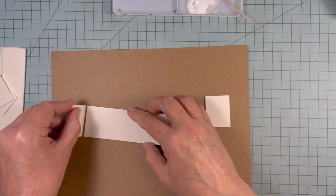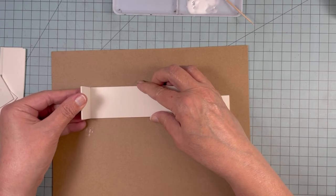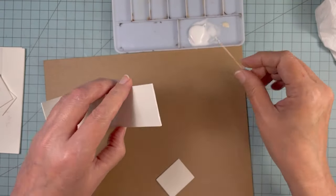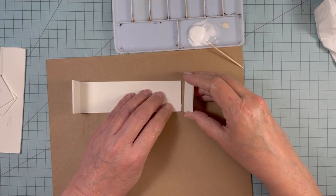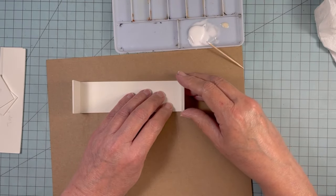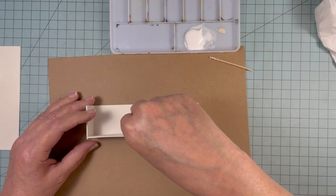This is the beginning of the bottom half. I'm gluing the sides onto the back first. Now the bottom piece.